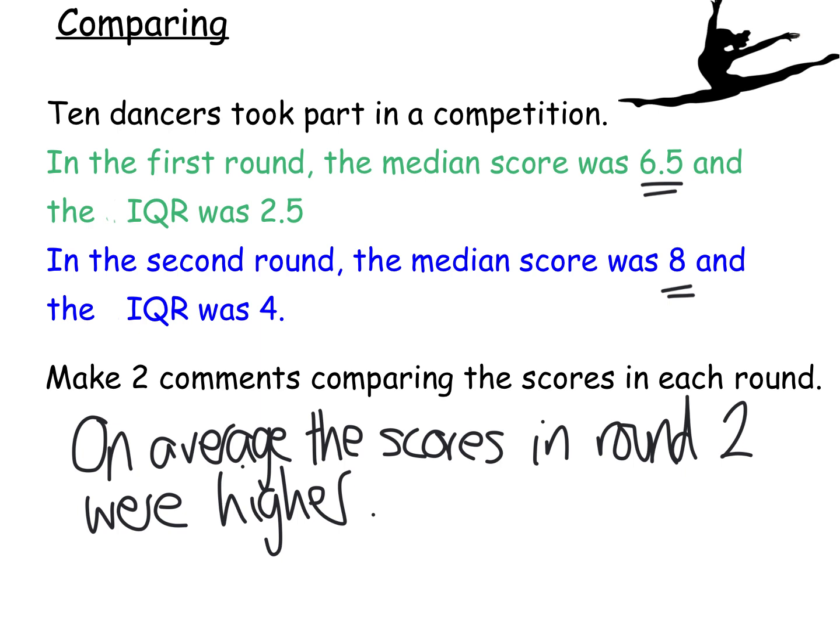That's one sentence. The other sentence has got to comment on the IQRs. The IQR has also gone up in round two. The higher the IQR, the more varied the numbers. So had the IQR gone down, I would have said the scores were less varied in round two. But in terms of dancing, this isn't good. The scores have got more varied in round two. So there's my second sentence. On average, the scores in round one were higher. And in round two, the scores were more varied.